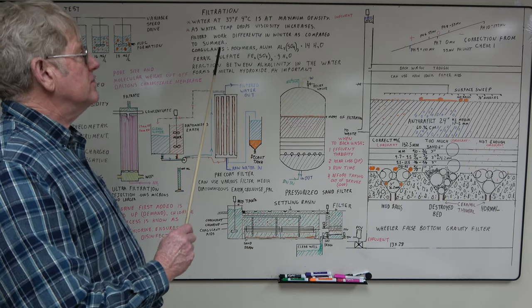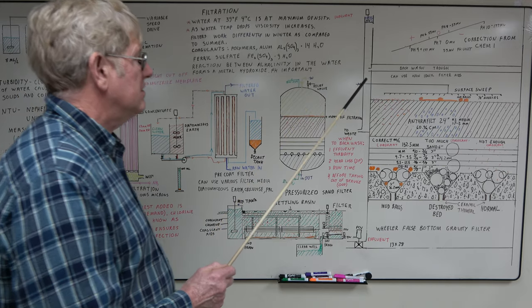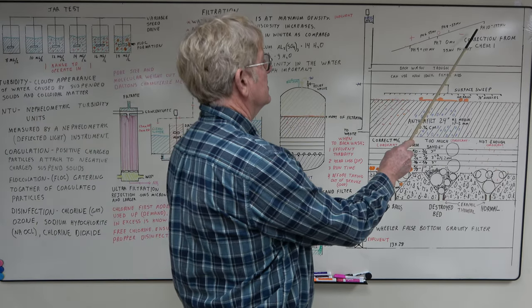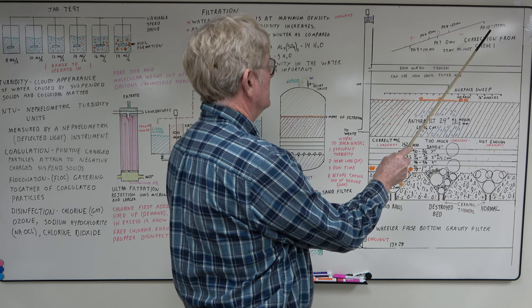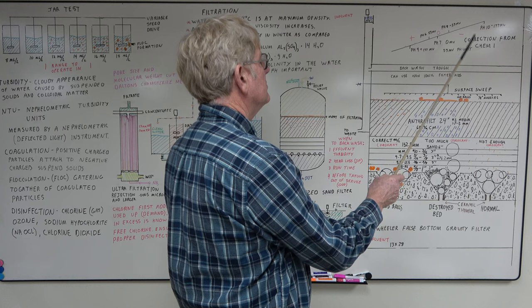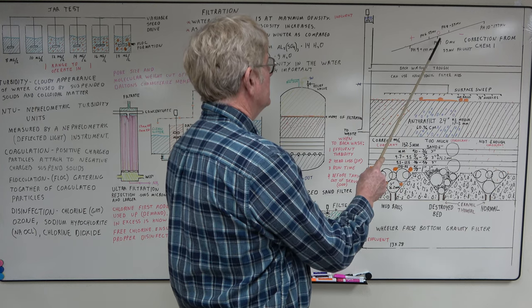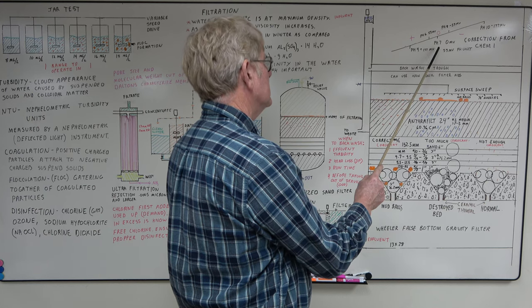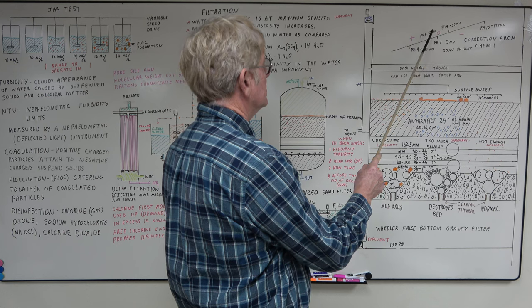Okay, this is our filtration video. We had a little error on our Chemistry 1 video. We left off the minus on the pH 10. It should be minus 177 millivolts at a 59 millivolt per pH unit slope. pH of 7 has zero millivolts. The hydrogen ions inside the electrode are the same as outside, so there's no electrode potential.